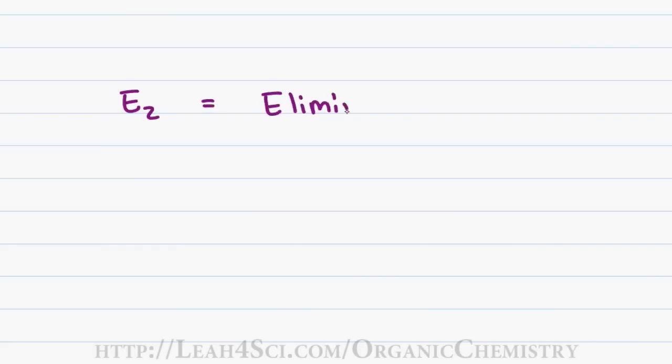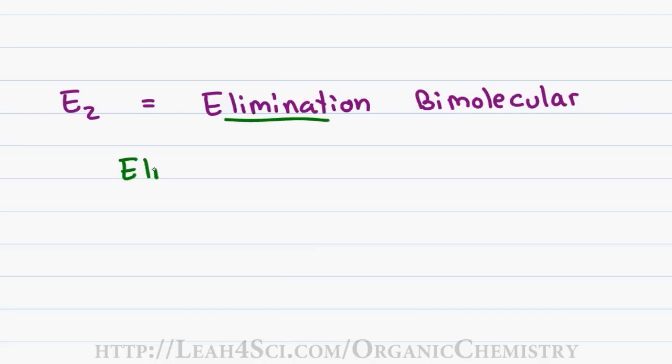E2 stands for elimination bimolecular, so let's break this down. Elimination can be understood as kicking something out of the molecule, specifically a beta hydrogen and a leaving group, so we should really call this reaction beta elimination.